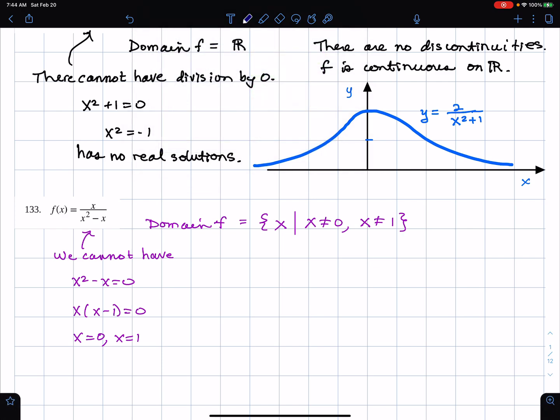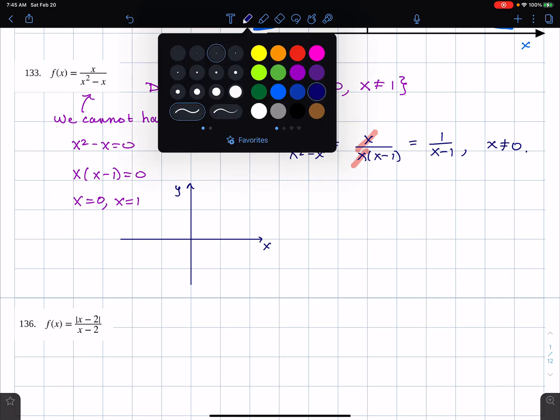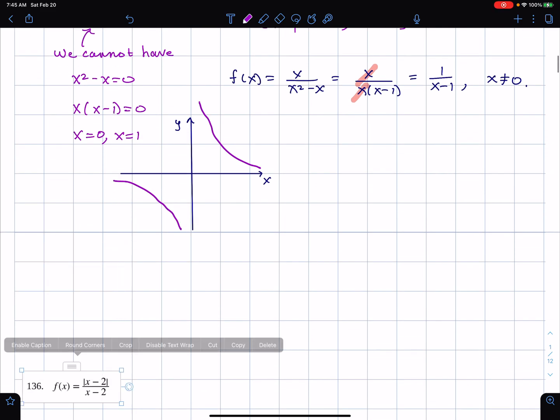Let me go further on this and write that f of x is x divided by x squared minus x. It can't hurt to factor. And what I see is the x's cancel out and I get one over x minus one. Now notice for one over x minus one, zero is in the domain. I can put in zero. So our function doesn't have zero in the domain. So I need to make a little note of that. It's one over x minus one, x not equals zero.